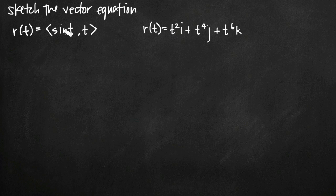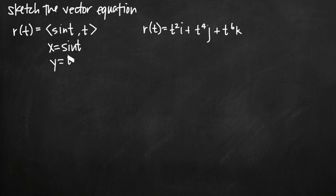Let's tackle the first one. We have two component values, sine t and t. We can extract these as parametric equations: x is equal to sine t, and y is equal to t. The most important thing to note is that there's no z component — no third component in our vector equation — therefore we can't pull out a parametric equation for z. That tells us we're going to be sketching the curve in an x,y coordinate plane, since there's no z component to add a third dimension.